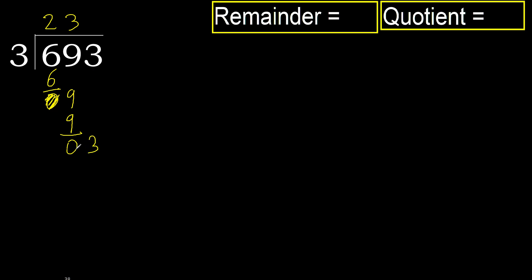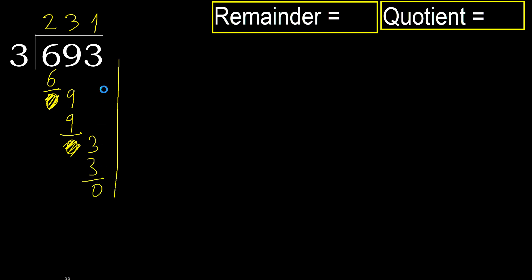Next, bring down 3. 3 multiplied by 1 is 3. Subtract.